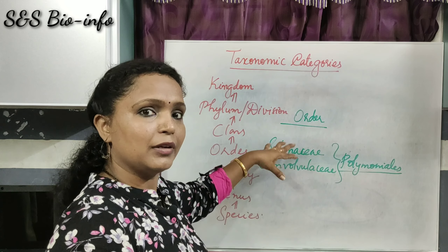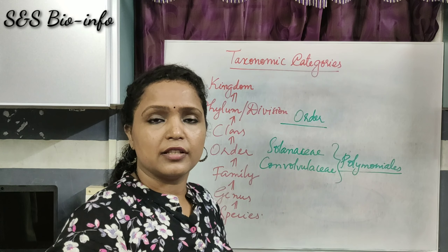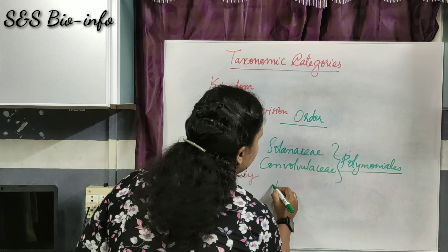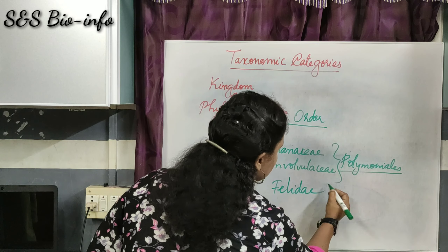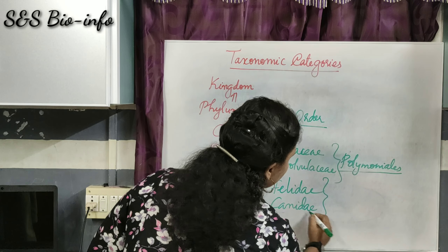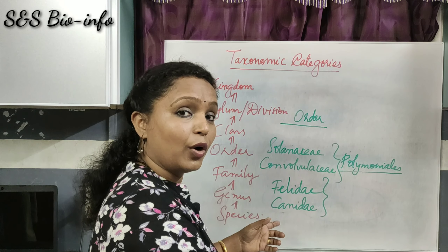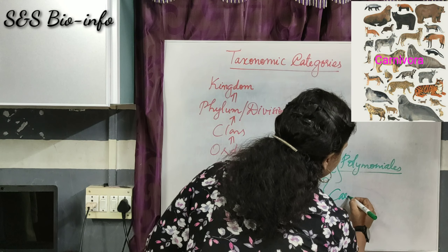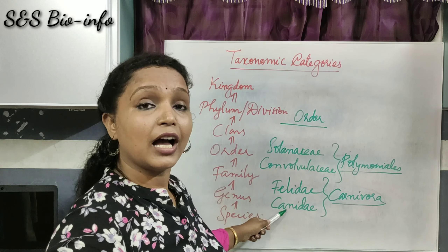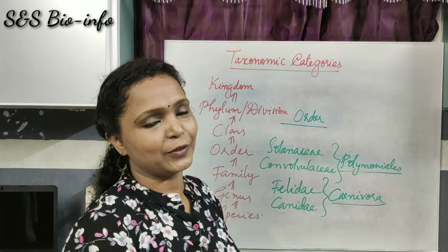But those families are extremely different in some other characteristic features. For animals, the families Canidae (family of dogs) and Felidae (family of cats) are related families that come under the same order Carnivora, as they have some similar features.